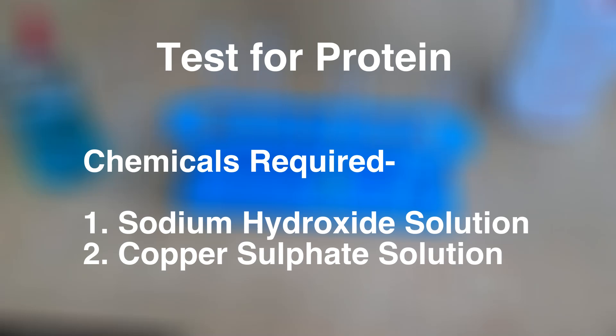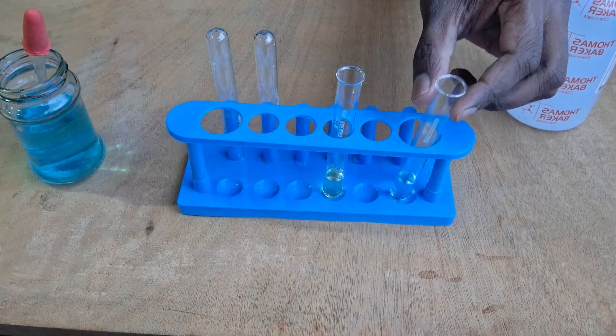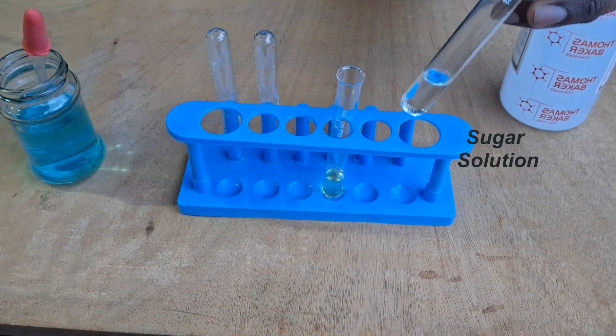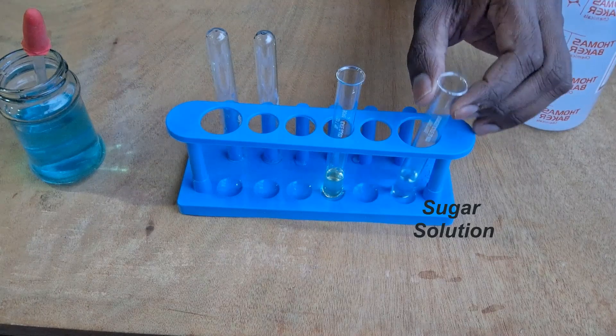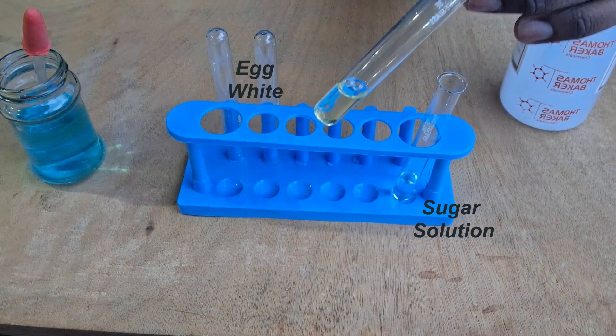In this video, we'll do a test for proteins using two chemicals: sodium hydroxide solution and copper sulfate solution. Both of these will be dilute solutions. Our first test sample is sugar solution, and the next test sample is egg whites.